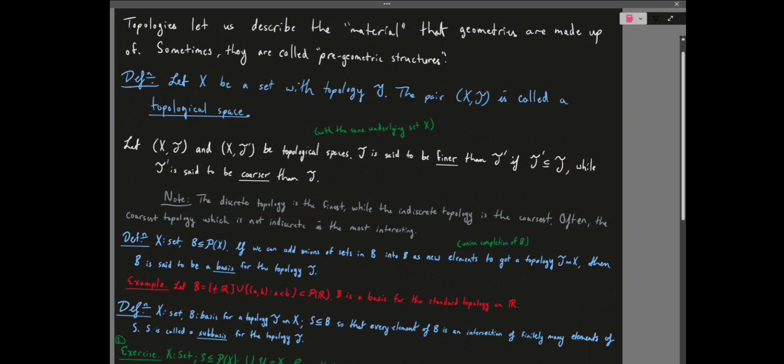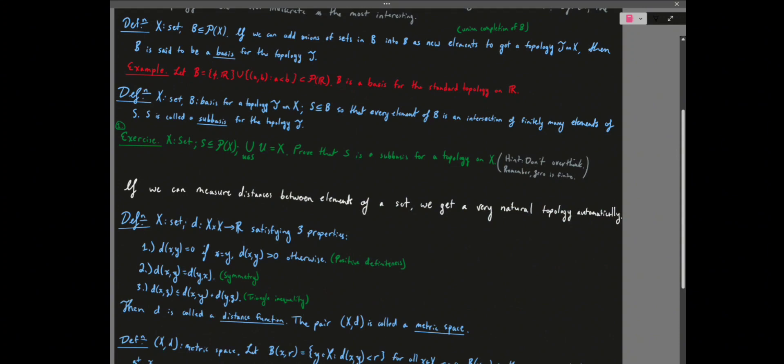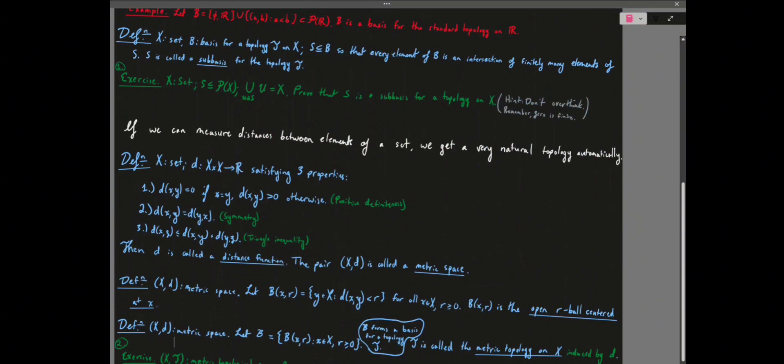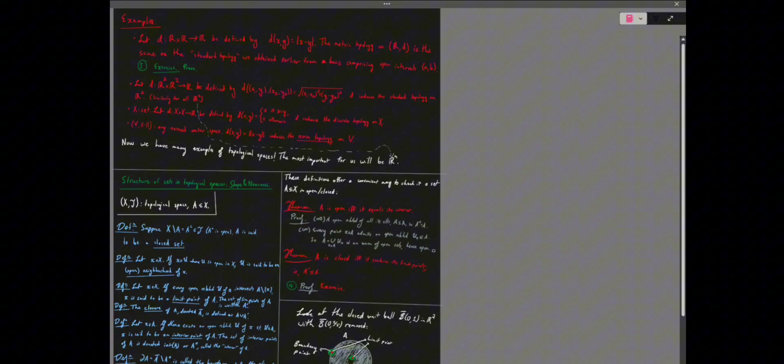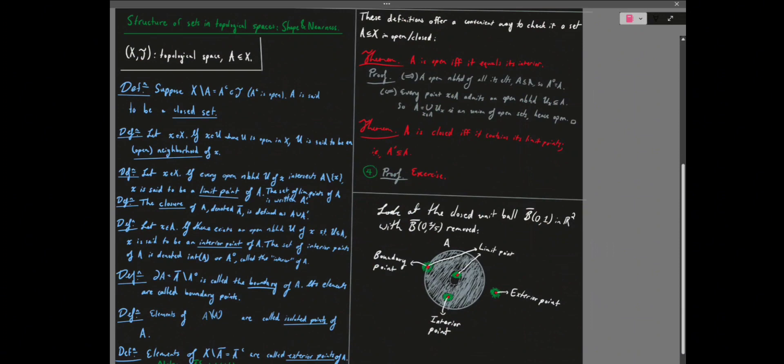A pair of a set with a topology on that set is a topological space. We talked about bases for topologies, some standard topologies like the metric topology on R, R2, and Rn, and how to extract a topology from a metric to get metric spaces or metric topologies. We also talked about the structure of sets in topological spaces.